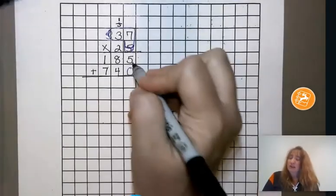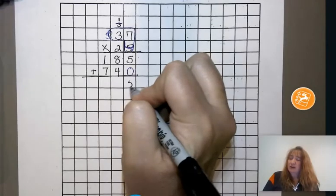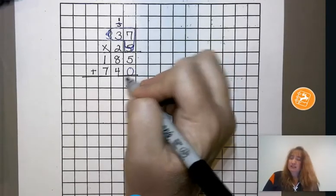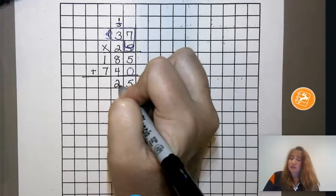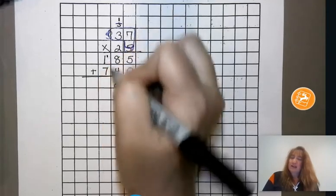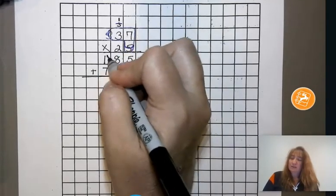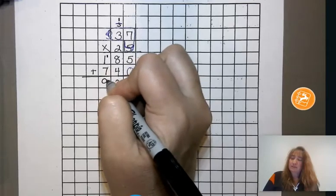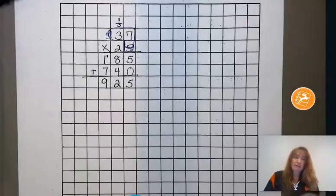So we have 5 plus 0 is 5. And then 8 plus 4 is 12. Put down the 2, carry the 1. And then we have 7 plus 1 plus 1 would be 9. So the product of 37 times 25 is 925.